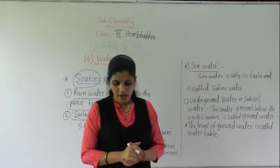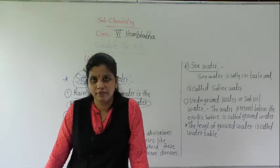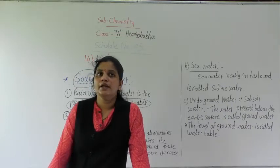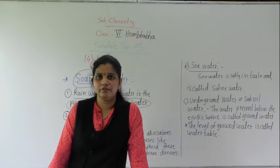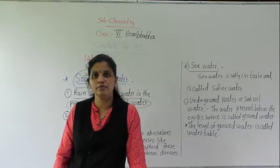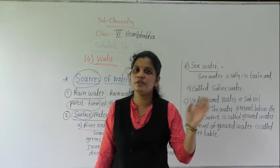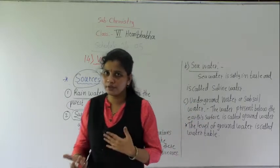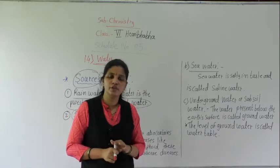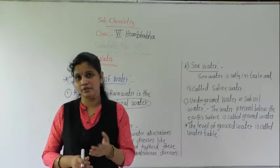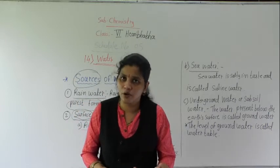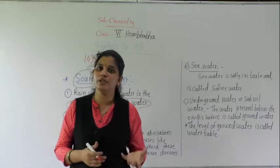But because of so many impurities — means if industries are there, then the sewage water — sewage water means the dirty water, in that so many impurities are present. And that water from the industries, what they are doing, that water goes into the river water, and because of that the river water gets polluted. And because of that, means the river water — we are drinking it, plants, animals — they are also drinking that water, and because of that so many diseases are caused. If you drink impure water, then so many diseases are caused.